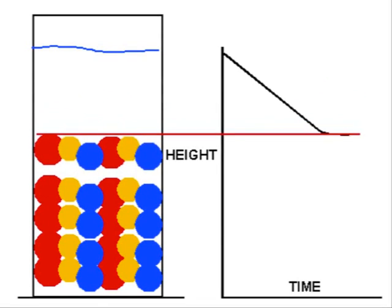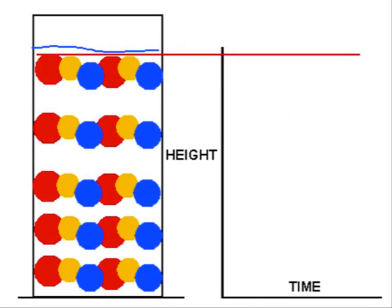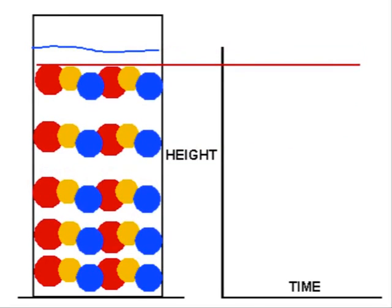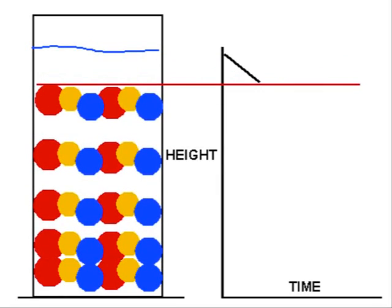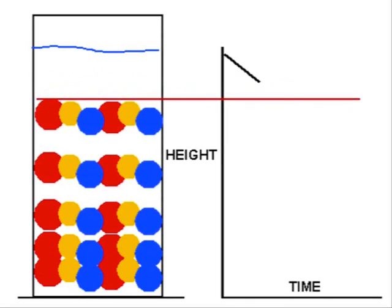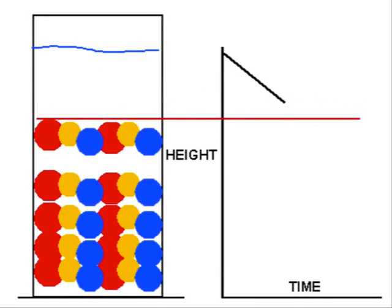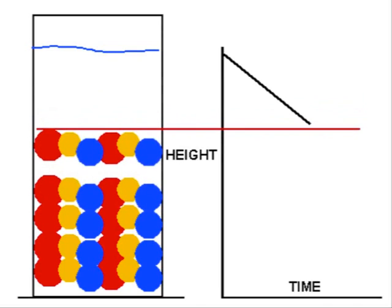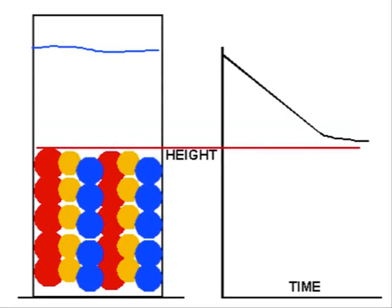And if we were to trace the interface, that's the boundary between the settling solids and the completely clear liquid called the supernatant that's left behind, then that interface plotted against time looks like the graph on the right. It's a straight line, and then reaches a period where it starts to curve over a little bit, and eventually becomes flat when everything's settled out.